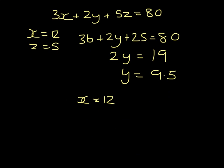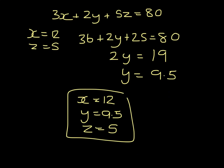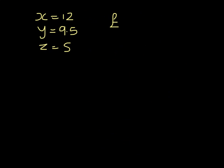So x is 12, y is 9 and a half, and z is 5. So a £2 coin weighs 12 grams, a £1 coin weighs 9 and a half grams, and a 20p weighs 5 grams.